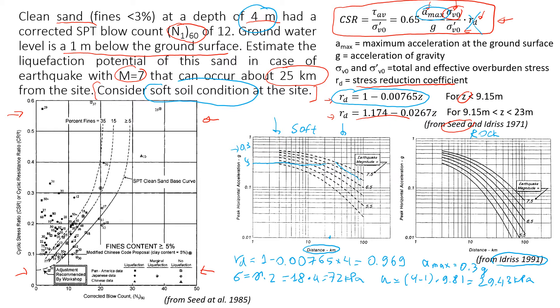And now let's find the vertical effective stress. So it will be total stress minus pore pressure, 72 minus 29.43, that will give us approximately 42.6 kPa.